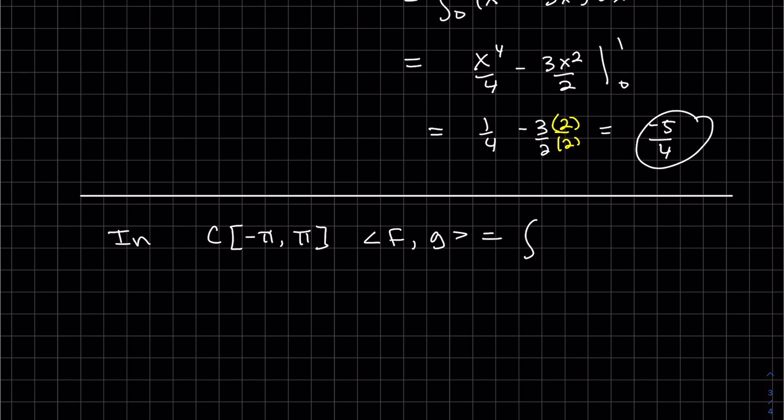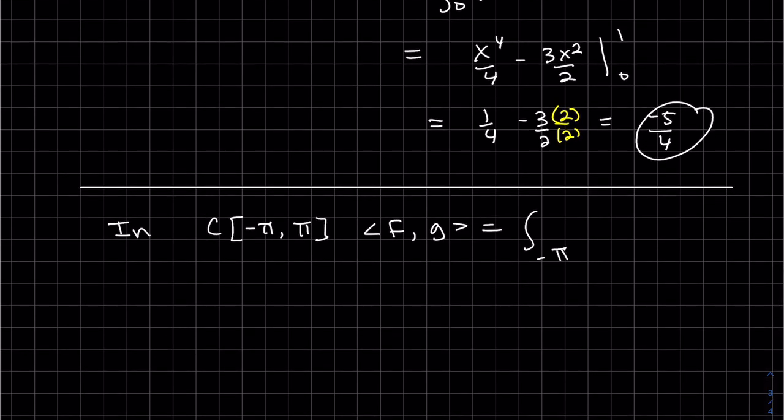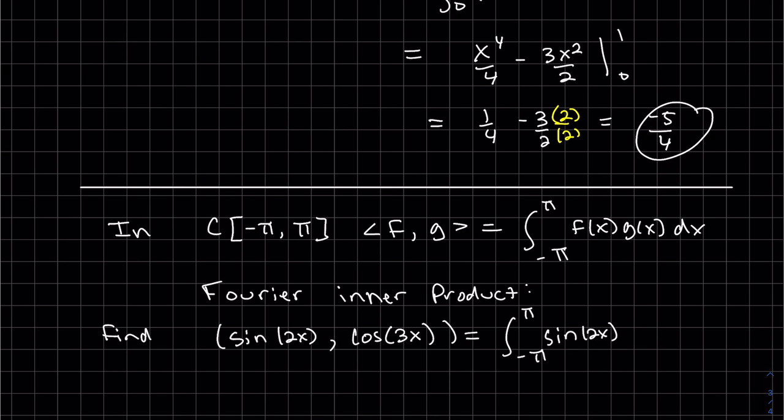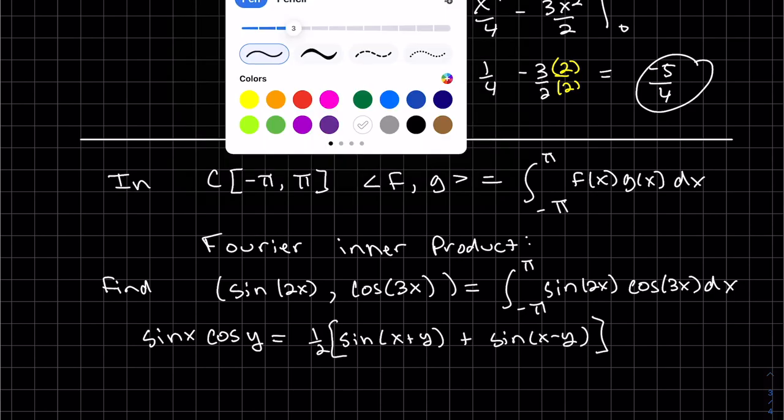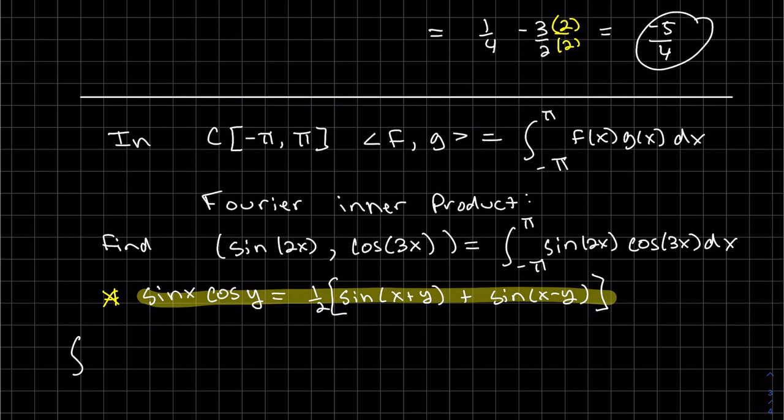So if we have continuous functions from minus π to π, it's the same thing, but we go from minus π to π in our definite integral. And we can have a Fourier inner product. This is a common inner product. I'm going to find... And in order to calculate this one, since this is a product, we are going to use product to sum since they're different angles. The u-substitution won't work. So here's the formula, product to sum that we need.